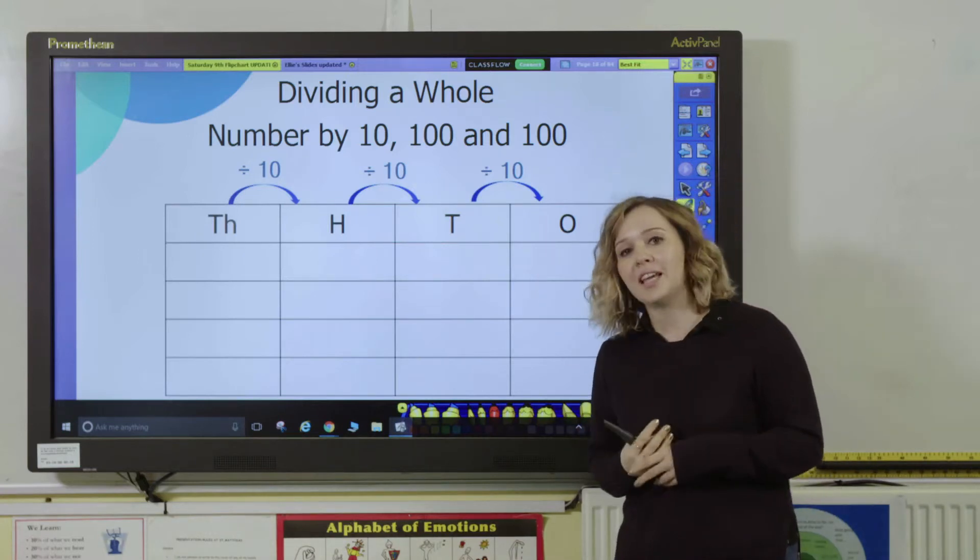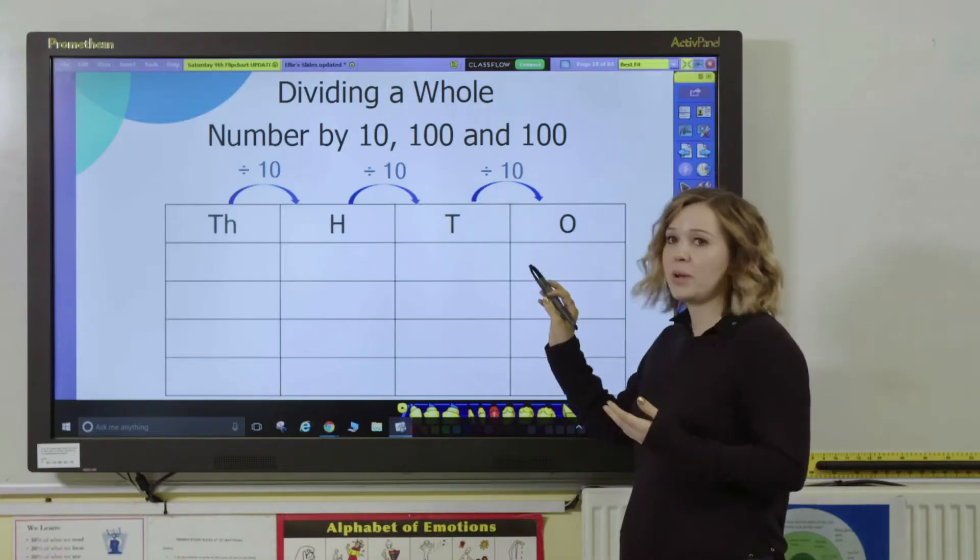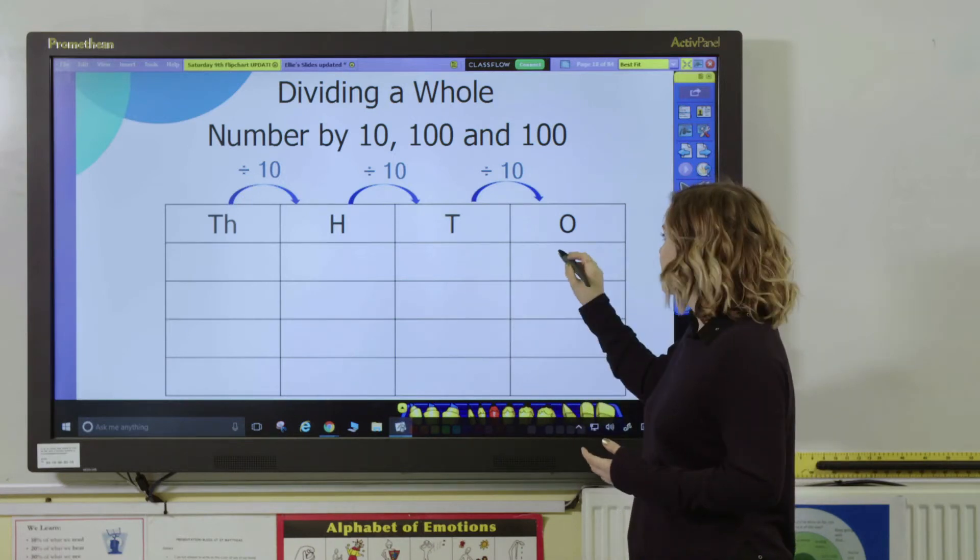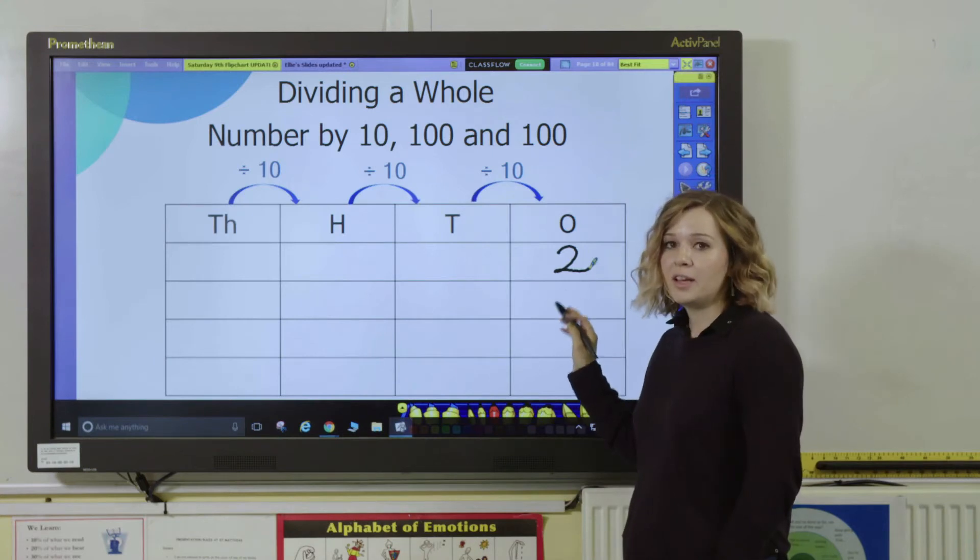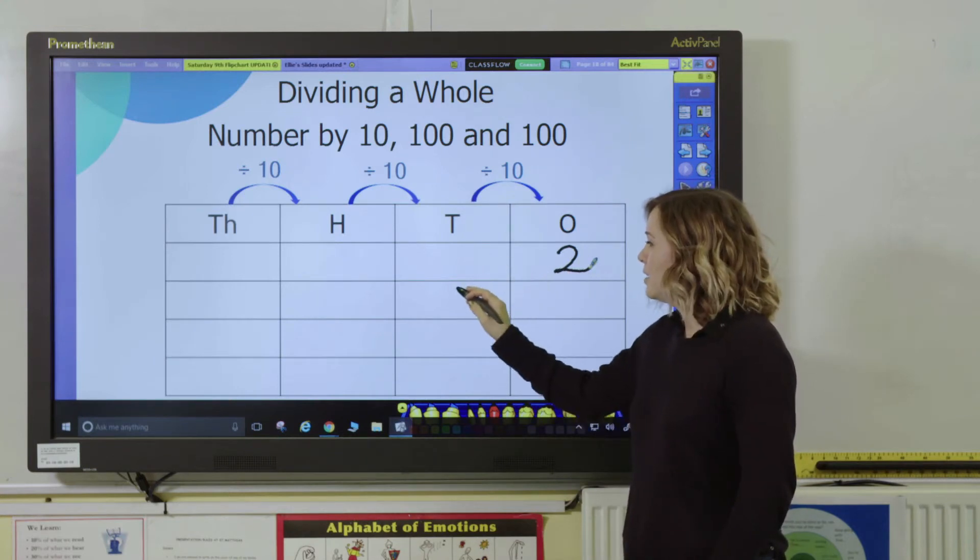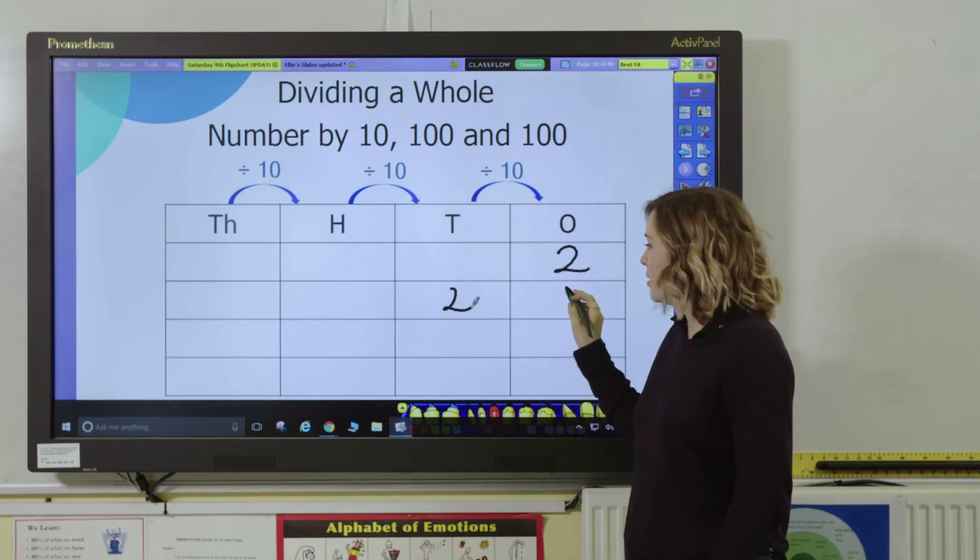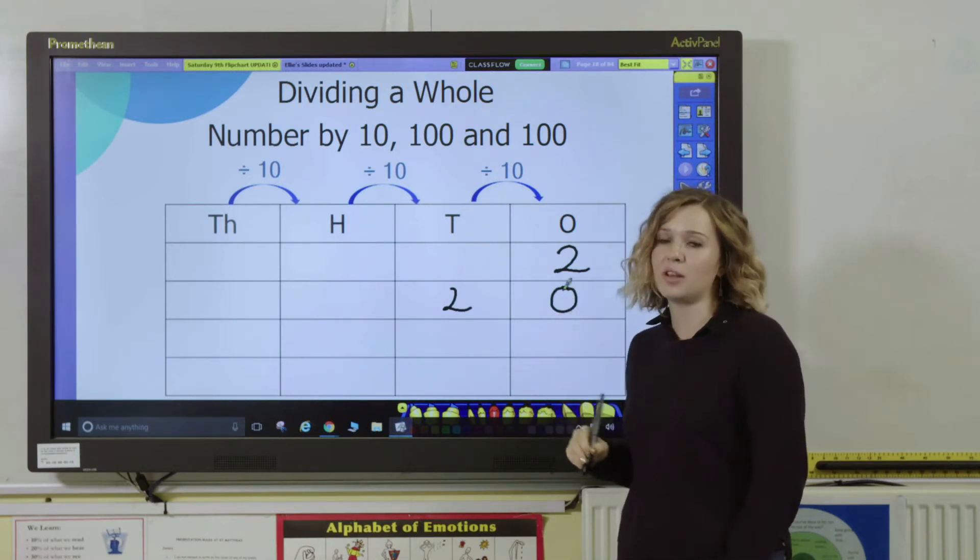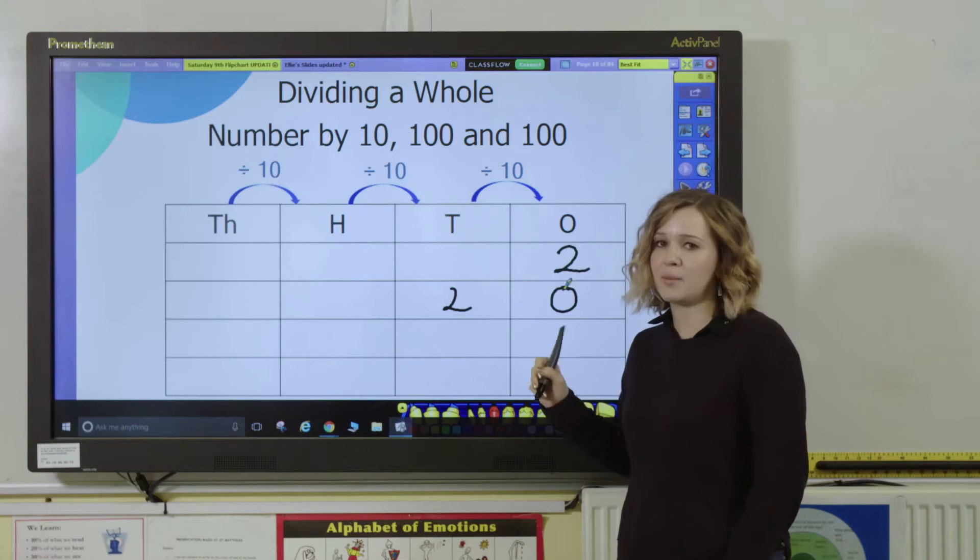Now you want to link it to multiplication. If pupils have been working on multiplying by 10, 100, and 1,000, they would have seen that when we times something by 10, it moves a space to the right. For example, if I have the number 2, if I multiply that by 10, my 2 moves to the tens column and I put a 0 in here as a placeholder in the ones column. So 2 times by 10 becomes 20.